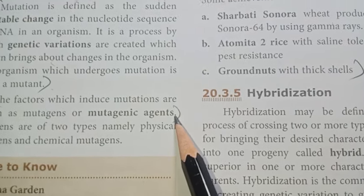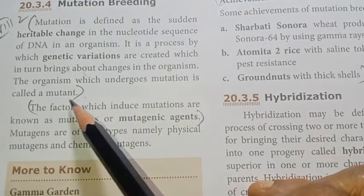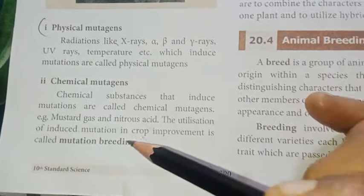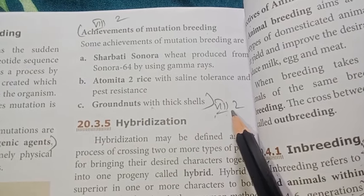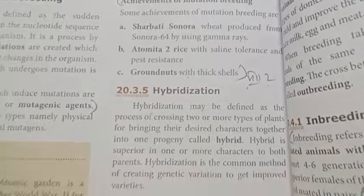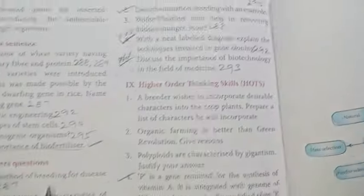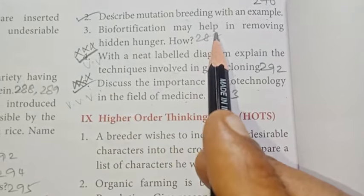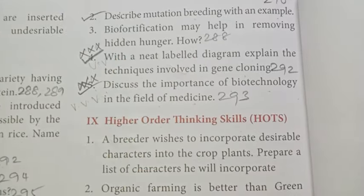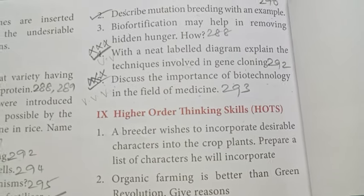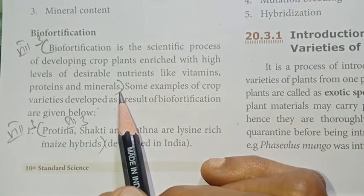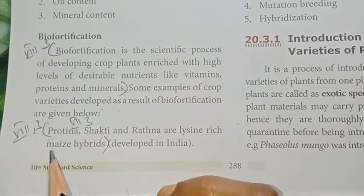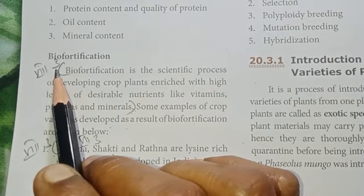Second long answer: covers physical mutagens, chemical mutagens, and achievements of mutation breeding. Third long answer (number four): With a neat labelled diagram, explain the techniques involved in gene cloning. Page 292, second paragraph — in gene cloning, a gene or piece of DNA is involved. Draw with a neat labelled diagram covering five points, producing a four-point answer paragraph.